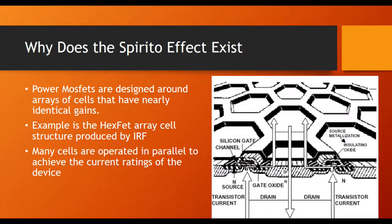You'll see that there's a diagram showing how International Rectifier produces their HexFET array, and you can see that there's cells that all operate in parallel on a planar basis, and each of these cells has a portion of the current that equals the full current rating of the device.